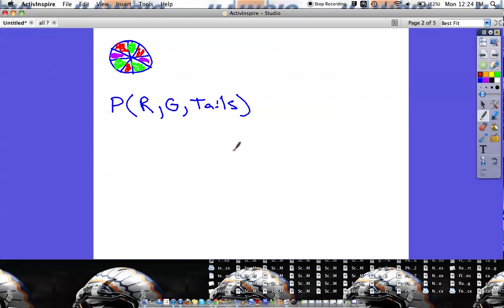So in order to do this we're going to want to find all of these different probabilities separately and then we're going to be multiplying them together.